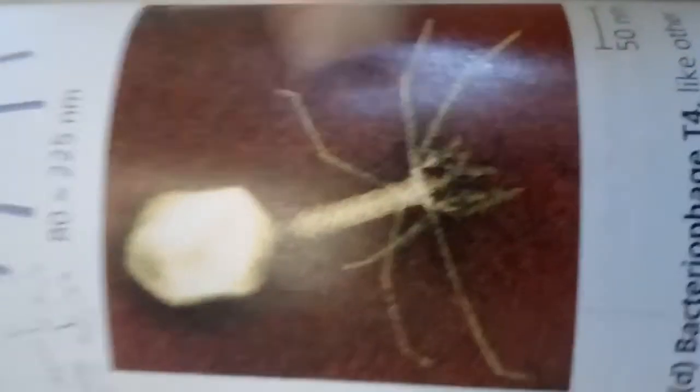Their capsids have elongated icosahedral heads. Notice these heads enclosing their DNA, attached to the head is a protein tail. What is that protein tail? A protein tail piece with fibers that the phages use to attach to a bacterium.